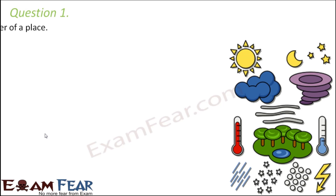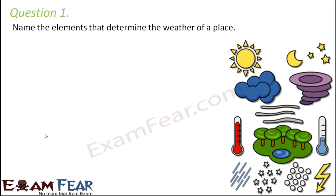Question number one: name the elements that determine the weather of a place. As I have mentioned before, weather is not just one thing — it is a lot of factors, and how all these parameters are behaving at a particular place defines the weather of that place for a particular day.